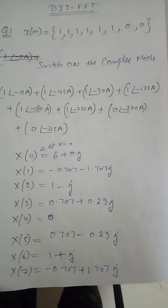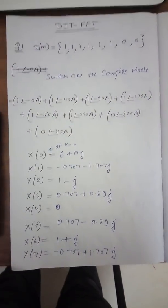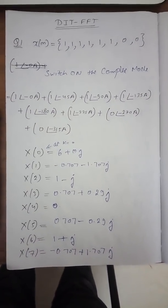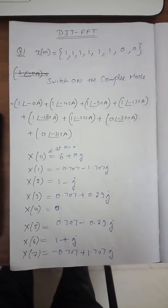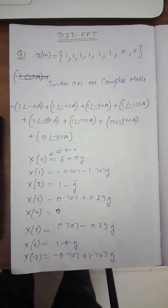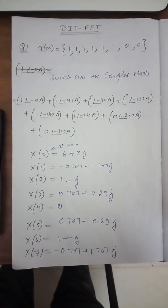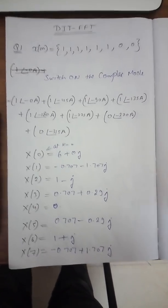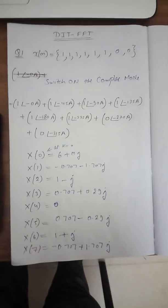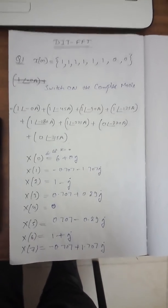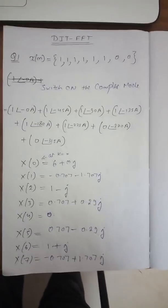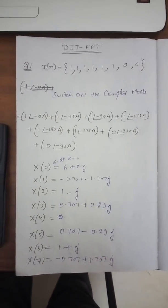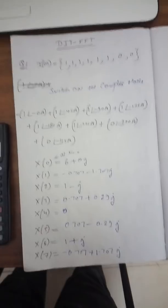So guys, this is the answer of our 8-point DFT. We calculated it within a minute, whereas doing it manually would have taken around 15 to 20 minutes. This was my first video — if you liked it, please subscribe to my channel and do leave your comments. Thank you very much.